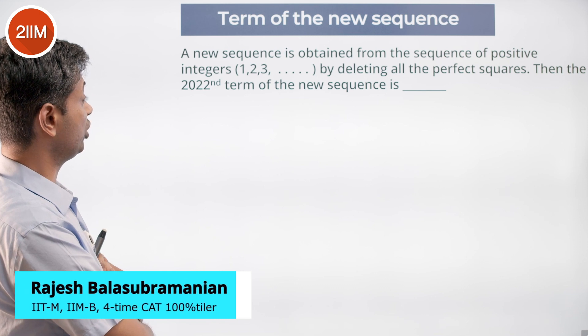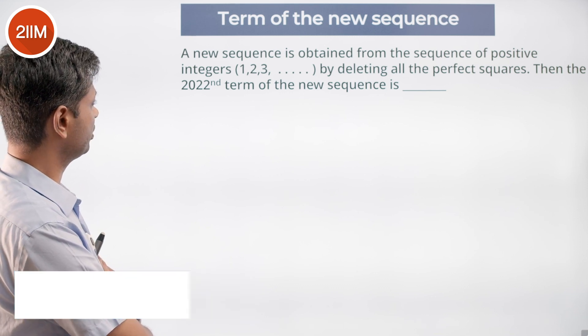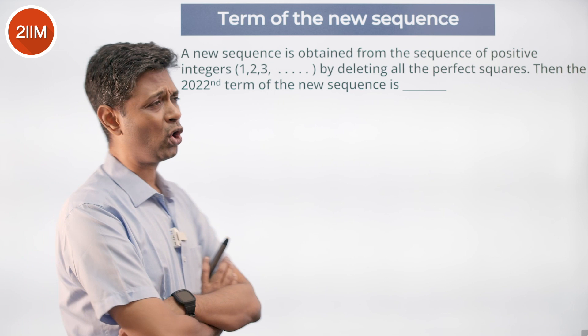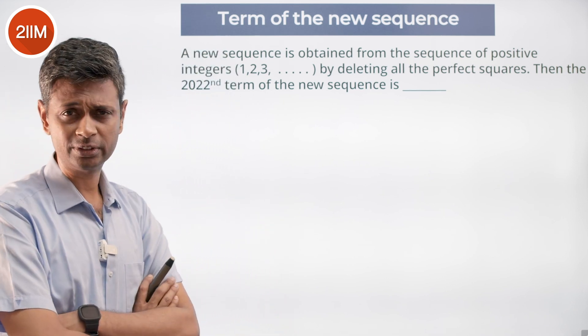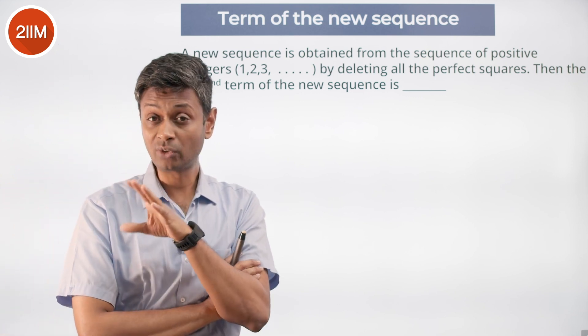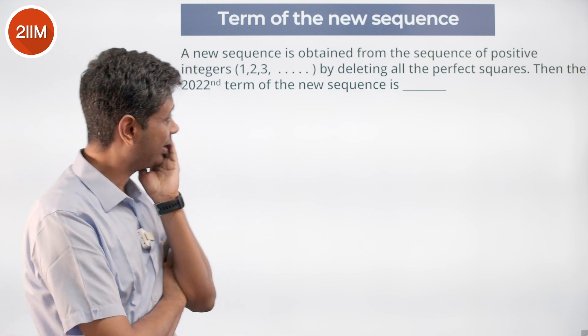A new sequence is obtained from the sequence of positive integers 1, 2, 3, 4, 5, 6, 7, 8, 9, 10 by deleting all the perfect squares. In the new sequence, the 2022nd term - 2022 is a large number. We need to find that number. Let's simplify this.